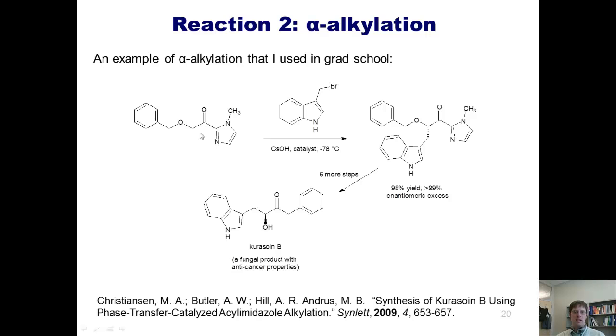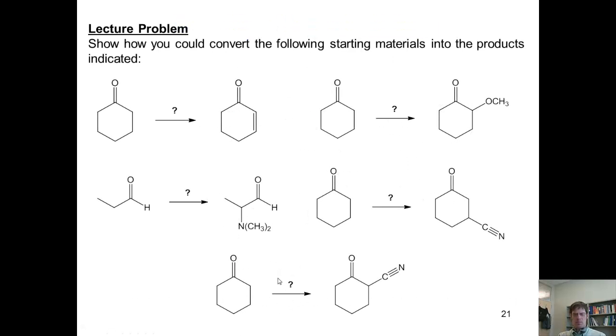This enolate's negative charge on this carbon then came, attacked this carbon here, to kick off the bromide leaving group, effectively alkylating the alpha-carbon with this piece here. I then converted this intermediate over six more steps into this final product, which is called Curacaoan B. It happens to be a fungal natural product that has anti-cancer properties. We published our findings in this journal reference here. Let's turn to some problems.